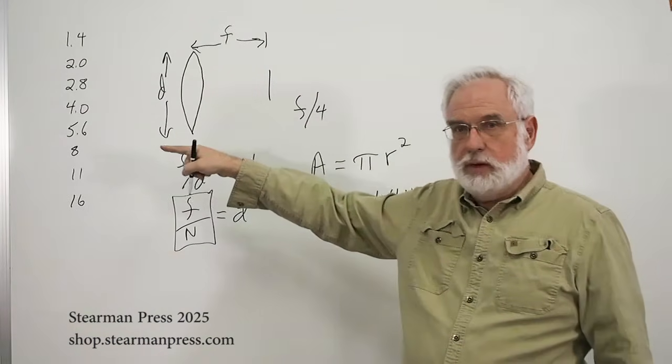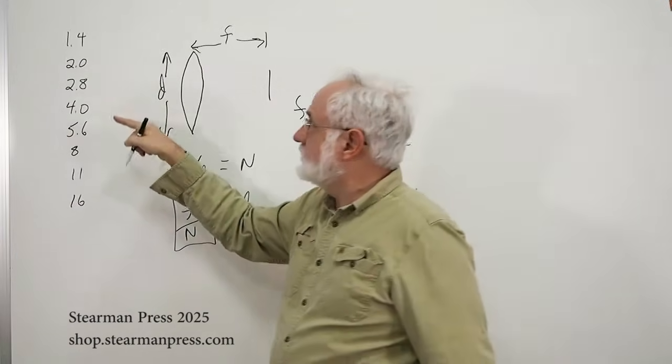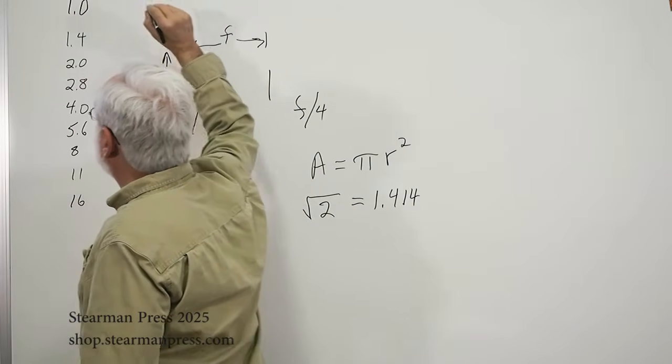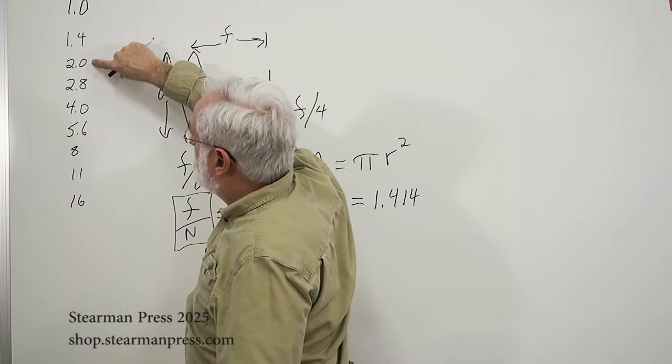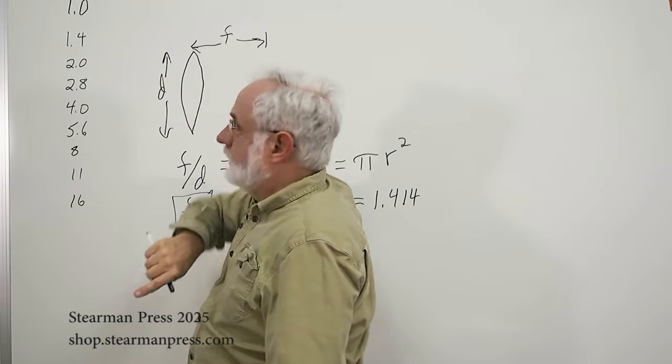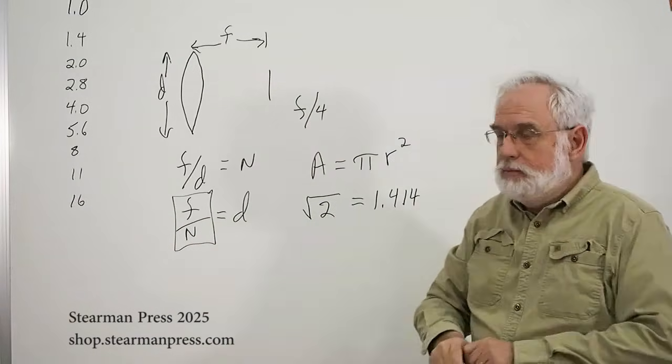Now, you look back at this sequence of numbers, and they all make sense. Especially, if you were able to afford an F1 lens, now you can see that each step is 1.4 times the value in front of it. So, very logical.